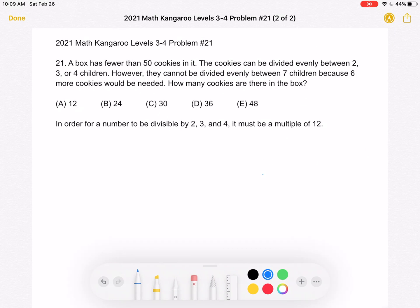So to start, we know that in order for a number to be divisible by 2, 3, and 4, it must be a multiple of 12. And we know that the number of cookies in our box is divisible by 2, 3, and 4, so it must be a multiple of 12.